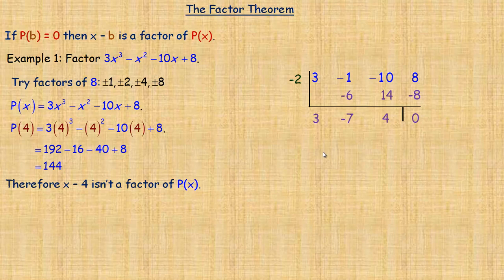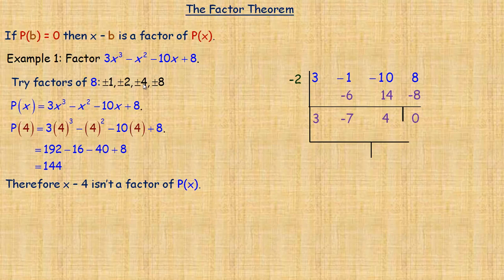So if we had substituted negative 2, we would get a value of 0, meaning x plus 2 is a factor. The quotient gives us the trinomial 3x squared minus 7x plus 4. You could factor that by conventional methods — decomposition, trial and error, or the Australian method — but I'm going to continue the synthetic division. Let's try 1; negative 1 won't work, but 1 will.